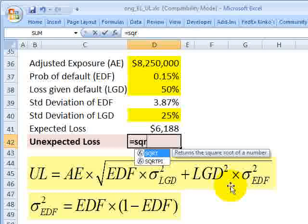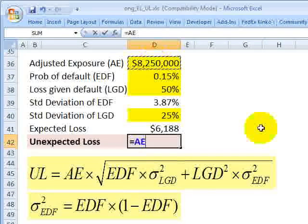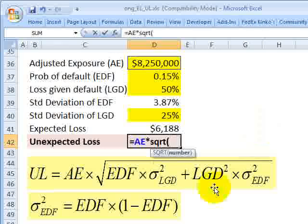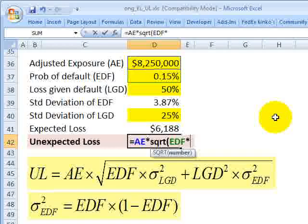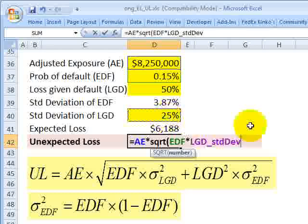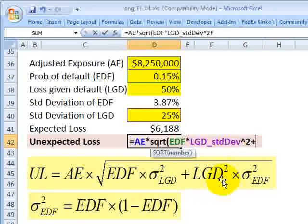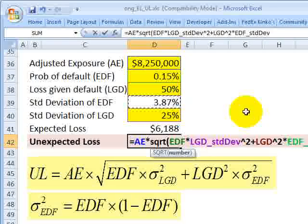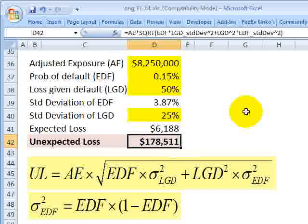But if I start with the adjusted exposure, I'm going to multiply that by the square root, I'm just going with this formula right here, of the expected default frequency multiplied by the variance of the loss given default. So that's the standard deviation squared. And now I'm going to add, now I'm over here, the loss given default squared multiplied by the variance of the expected default. So that's this quantity squared. And then I'm going to close the parens. And I get $178,511.